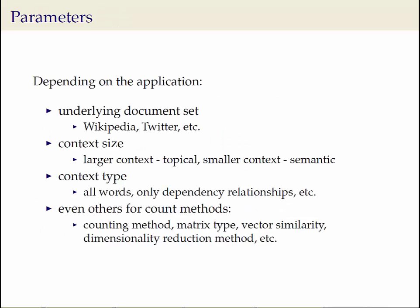All models offer a range of parameters that need to be specified. First, the dataset used for training plays a vital role — some datasets from specialized domains, such as medicine, may offer different semantics than general-purpose ones such as Wikipedia. The context size plays an important role in the similarity type obtained, with larger contexts leading to more topical similarity, and more restrictive context leading to semantic and syntactic similarity. Specifically, the context can be filtered to exclude frequent words or keep only certain parts of speech or dependency types.